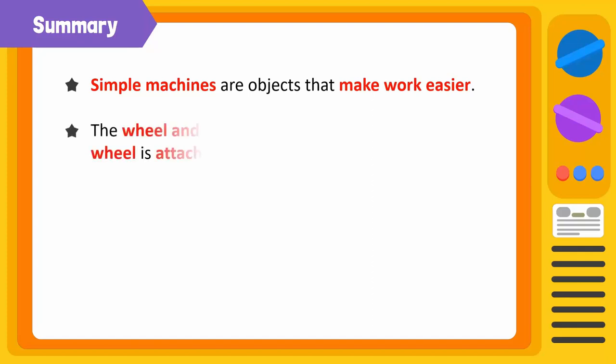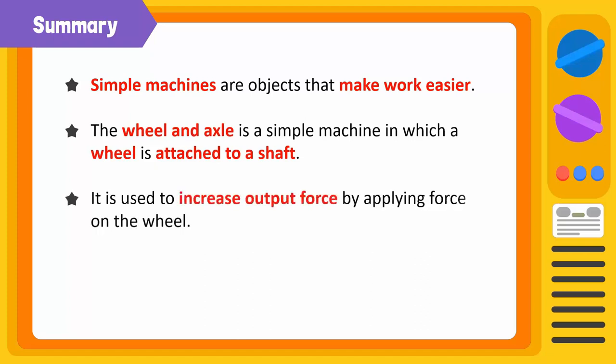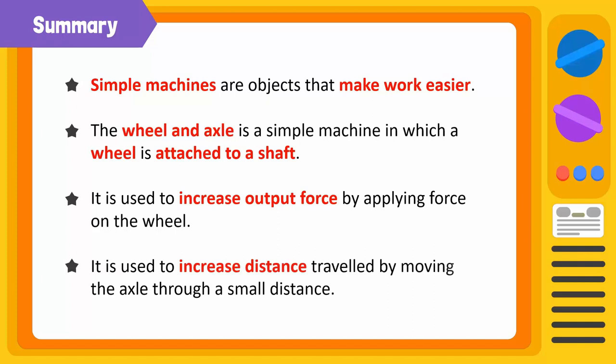Time to summarize! Simple machines are objects that make our work easier. The wheel and axle is a simple machine in which a wheel is attached to a shaft. The wheel and axle is used to increase output force by applying force on the wheel. This machine is also used to increase distance traveled by moving the axle through a small distance.